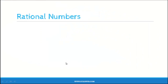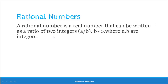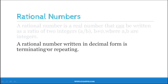So now comes the definition of rational numbers. A rational number is a real number that can be written as a ratio of two integers a/b, where b is not equal to 0 and a and b are integers. A rational number written in decimal form is either terminating or repeating.